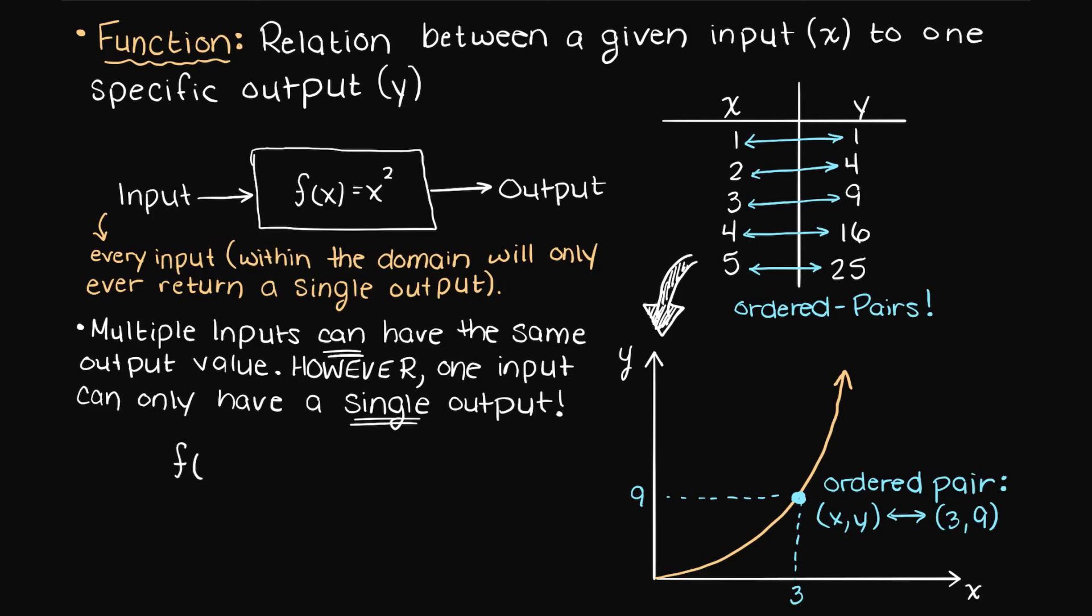Functions are typically represented in several ways, but they all mean the same thing. Firstly, we could have f of x, which just means that the value f of x is a function, so remember, one input to one output, for the input variable x.